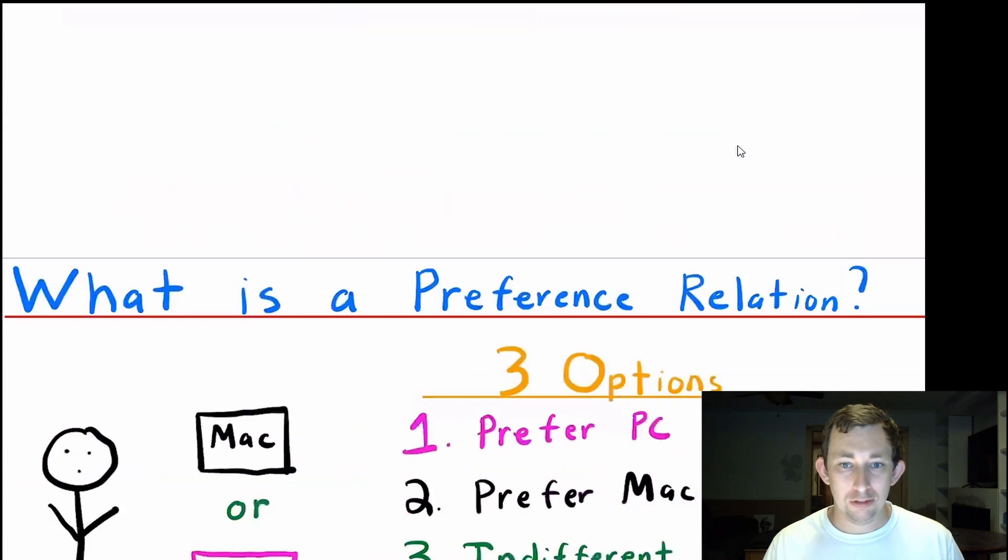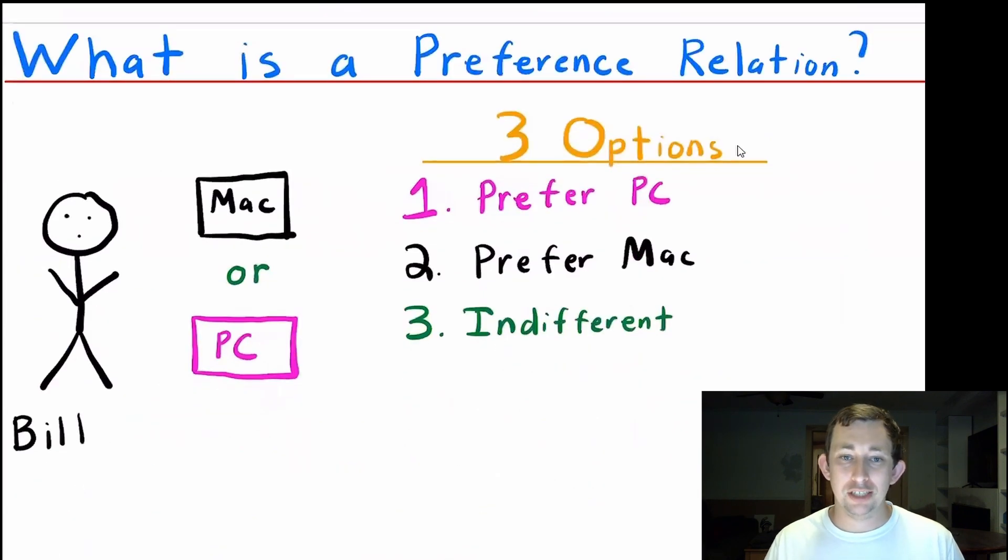What is a preference relation? Well, a preference relation is just a way of describing preferences. So we've got Bill, he's choosing between a Mac or a PC. He's got three options or three ways that he can rank those two computers. He can say that he prefers a PC, he can say that he prefers a Mac, or he can say that he's indifferent.